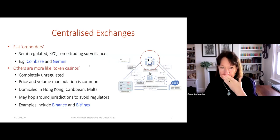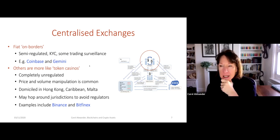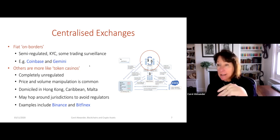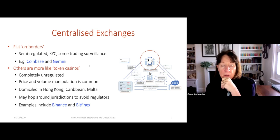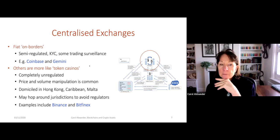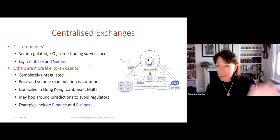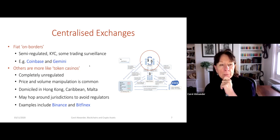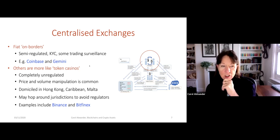Now let's look at centralized exchanges in more detail. The main exchanges like Coinbase allow fiat to be transferred onto the exchange and held there. Gemini is another big US exchange — they're semi-regulated. They have KYC — know your customer — it's very difficult to get an account; you have to provide your passport and bank details. There is also some trading surveillance. These fiat onboarders are the more recognized centralized exchanges.